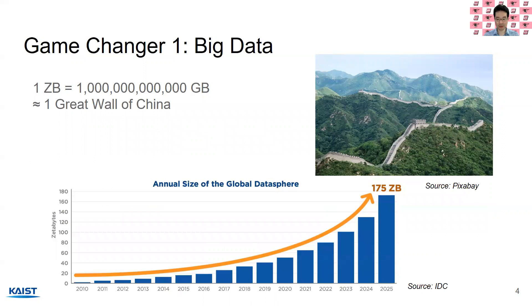The reason deep learning has become so prevalent is thanks to its excellent performance, and that's due to mainly two game changers. The first one being the availability of big data. One zettabyte amounts to 10 to the 12 gigabytes, and to store this amount of data, you would need to build data centers that amount to one Great Wall of China.